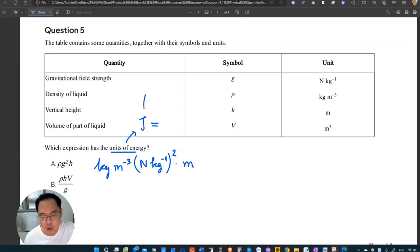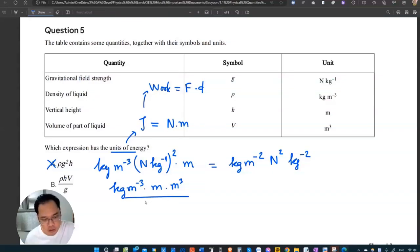Secondly, B, rho is kilogram meter cube minus. H, the height, is meter. Volume is meter cube. Then divide G. G is Newton per kilogram. We simplify kilogram meter minus three times meter meter three here. So let's make the power here.